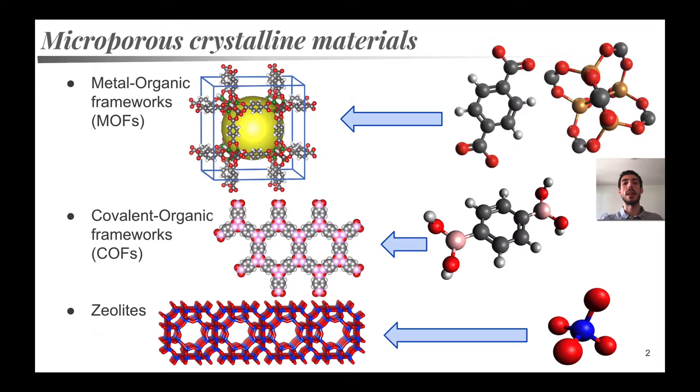Let's start by introducing microporous crystalline materials. These are materials characterized by microscopic pores where molecules can absorb, and we distinguish three main classes. Metal organic frameworks, where organic links are connected with organometallic chemistry. Covalent organic frameworks that are very similar to polymers but they retain some crystallinity.